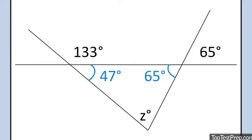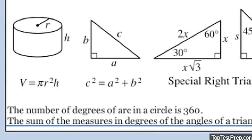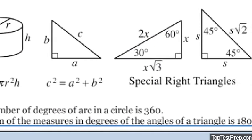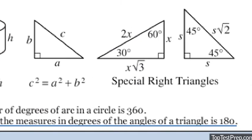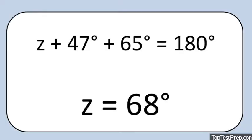Now that we have measures of the other two angles, we can find Z. The sum of the measures in degrees of the angles of a triangle is 180. Translating that into an equation: Z plus 47 plus 65 equals 180, so Z equals 68.